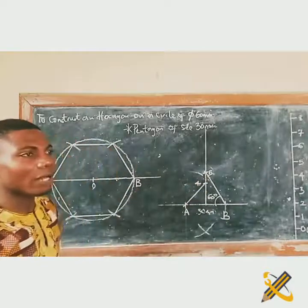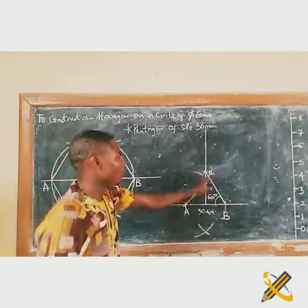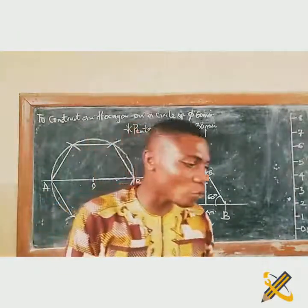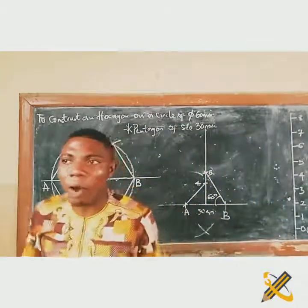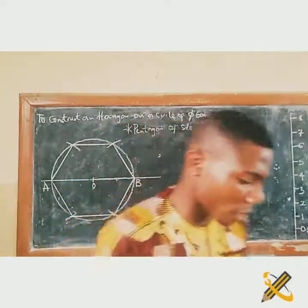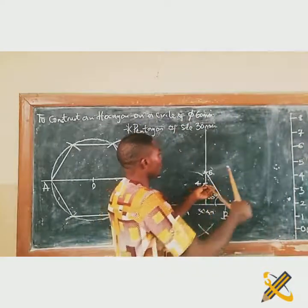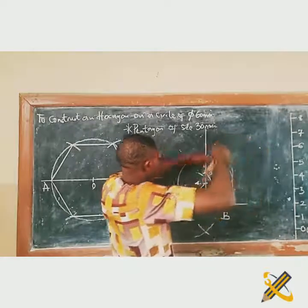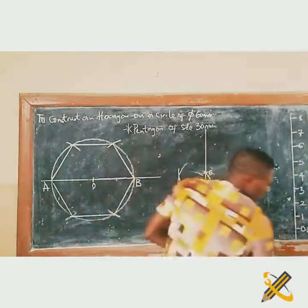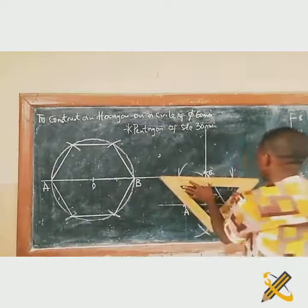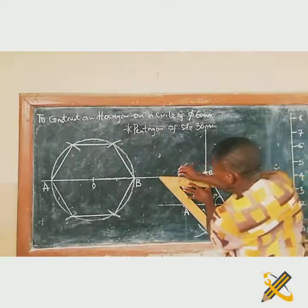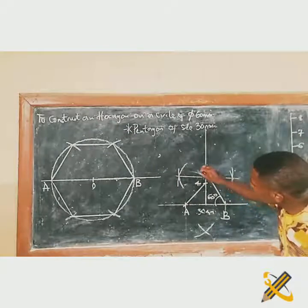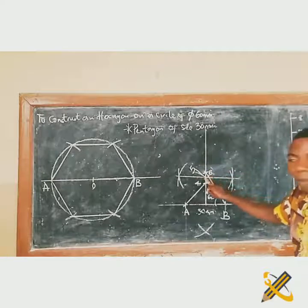Since we are constructing a pentagon and a pentagon has five sides, I have point 4 and point 6 but I need point 5. To get point 5, I am going to bisect the distance between point 4 and point 6. I place my compass on point 4 and strike, then on point 6 and strike. Joining the bisectors gives me point 5 on the vertical line.